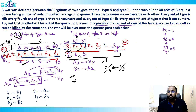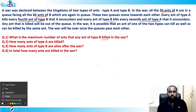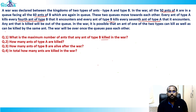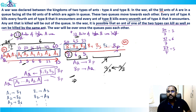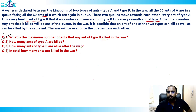Now let's answer the questions. Question 1: What is the maximum number of ants that any ant of type B killed in the war? The answer is 7 — b1 killed 7 ants, b2 killed 6, b3 killed 5, so the maximum is 7.